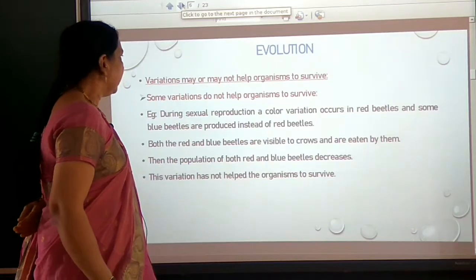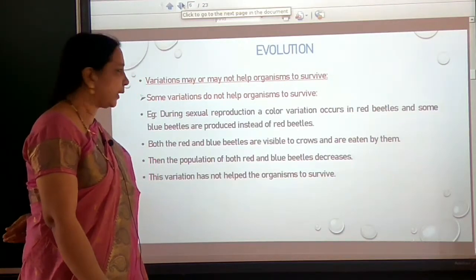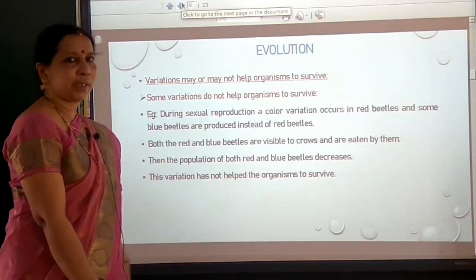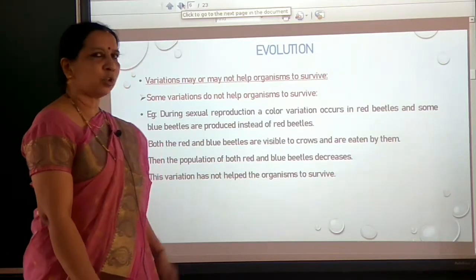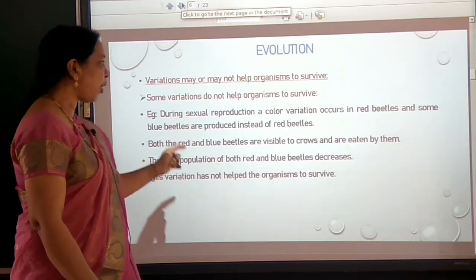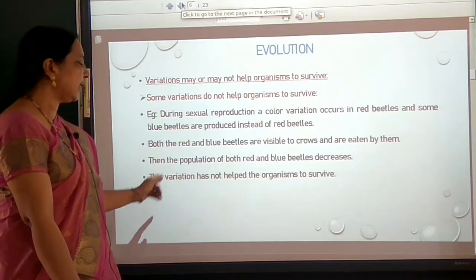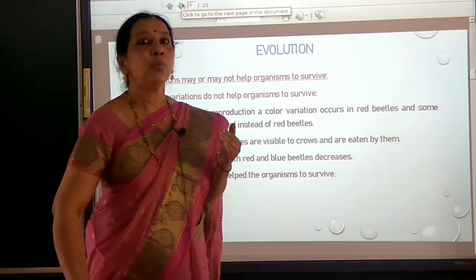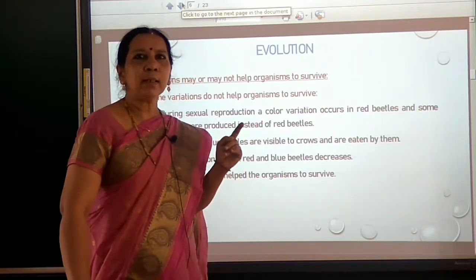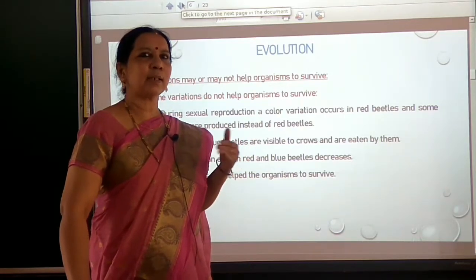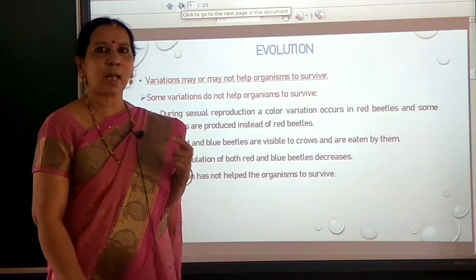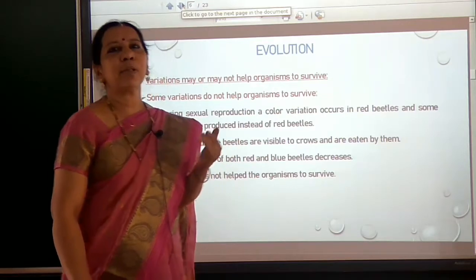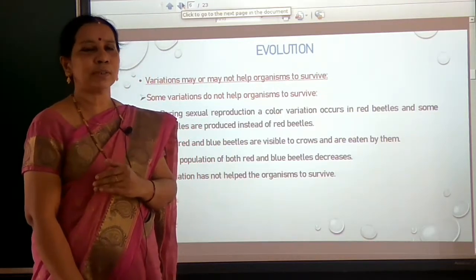Variations are more during sexual reproduction. A color variation arises and some green beetles are produced instead of red beetles. The green beetles are not visible to crows and are not eaten by them. Gradually the population of red beetles decreases and the population of green beetles increases — this variation has helped the organisms to survive. During sexual reproduction, another color variation occurs and some blue beetles are produced. Both red and blue beetles are visible to crows and both are eaten. The population of both decreases — this color variation has not helped the organisms to survive. Since genes control the traits, the frequency of some genes in the population changes over generations.